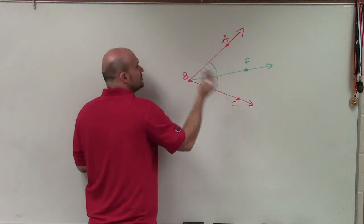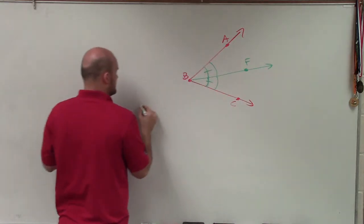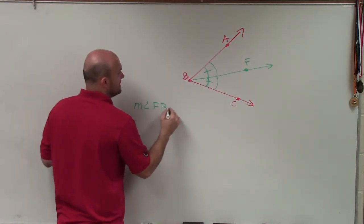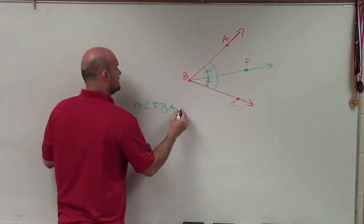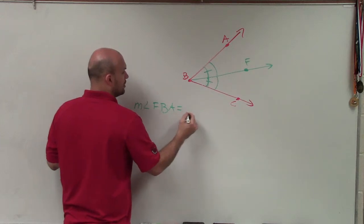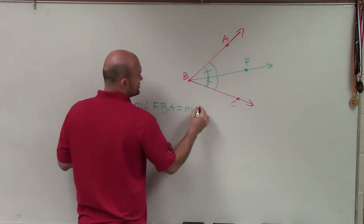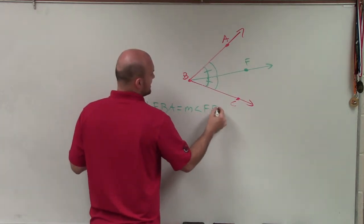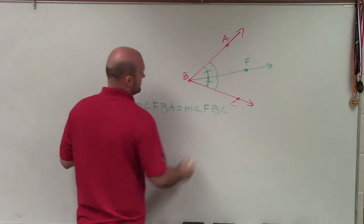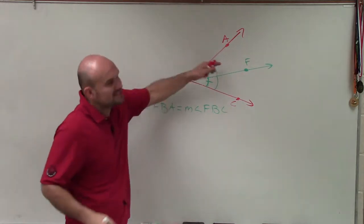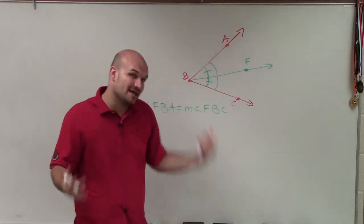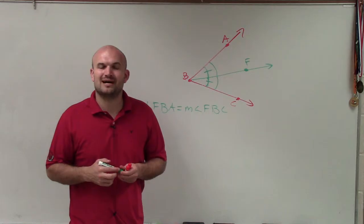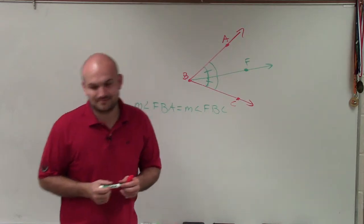So we've now made two angles, where we could say that the measure of angle FBA is equal to the measure of angle FBC. So now these two measures are equal to each other, which is very important when we have an angle bisector. Thanks.